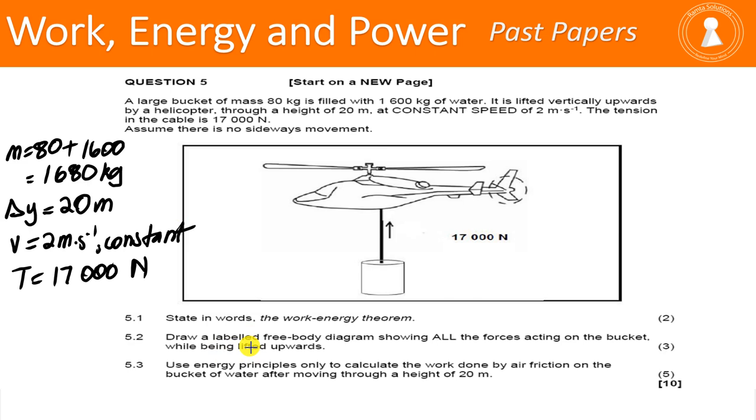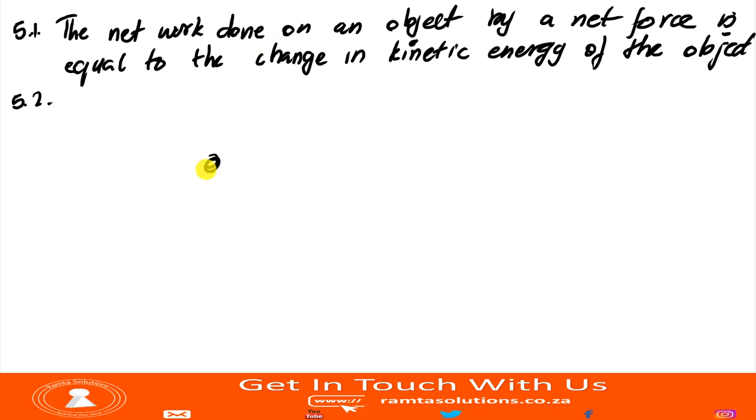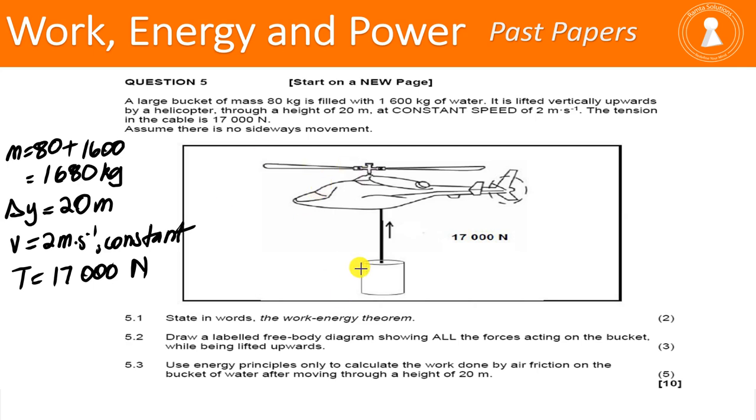Now, draw a labeled free body diagram showing all the forces acting on the bucket while being lifted upwards. So while this is being lifted upwards, we will consider tension. Let's say this is our object free body. So tension will be going up. And what is this? Weight will be this way. And of course, there's also friction. I'm gonna call it small letter F. So this is your free body diagram. These are the forces acting on the object. And it is tension that's putting it up in this case.